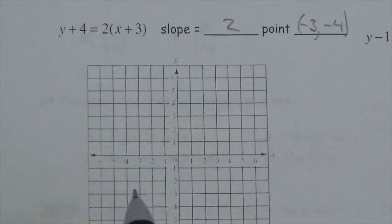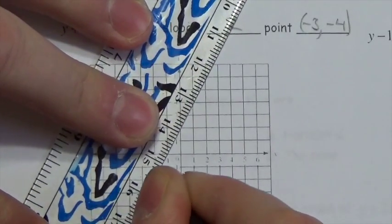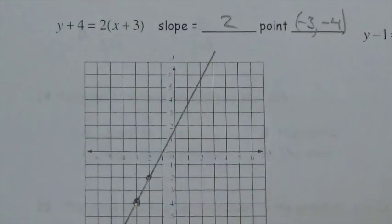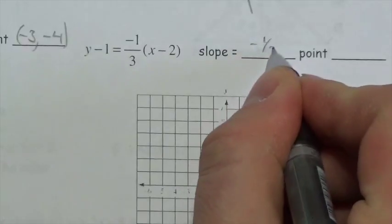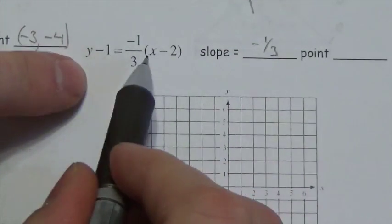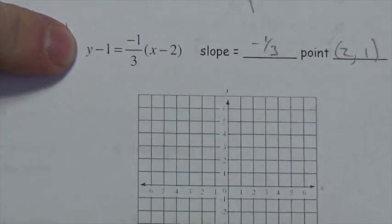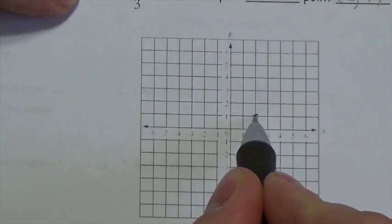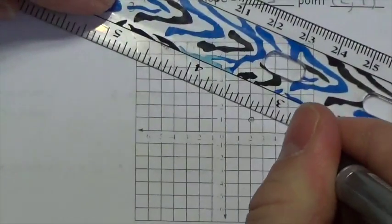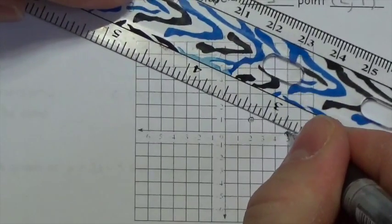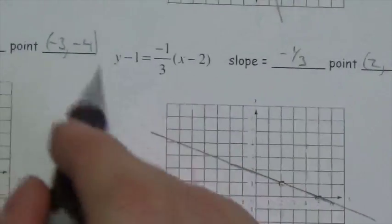For the next example, the slope is negative 1/3 and the point is (2, 1). Plotting (2, 1) — 2 to the right, 1 up — and using a slope of negative 1/3, going down 1 and over 3, gives a second point. Connecting those points gives the line.